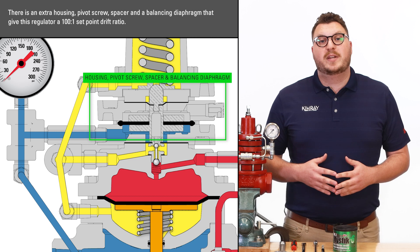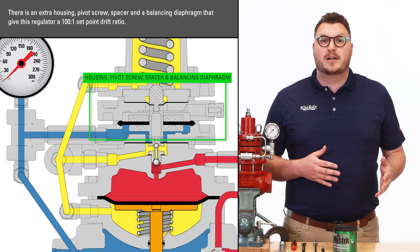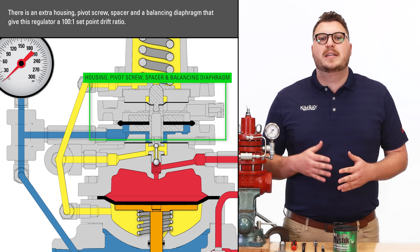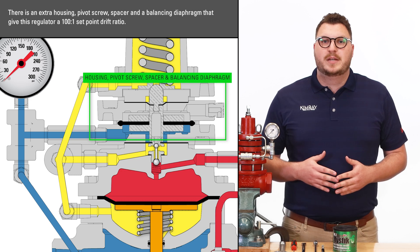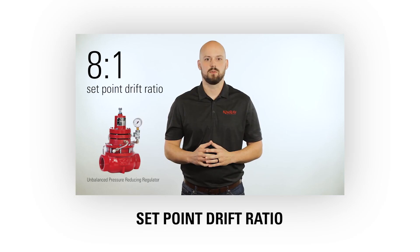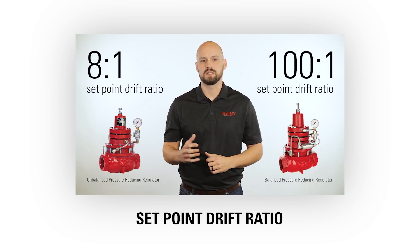The primary difference between Kimray's pressure-reducing regulator and the balanced version is the set point drift ratio. To learn more about this concept, see our other video specifically on set point drift ratio.